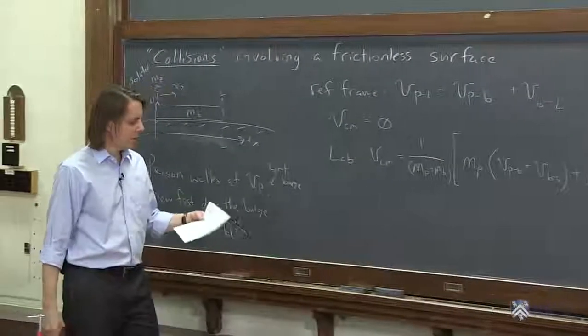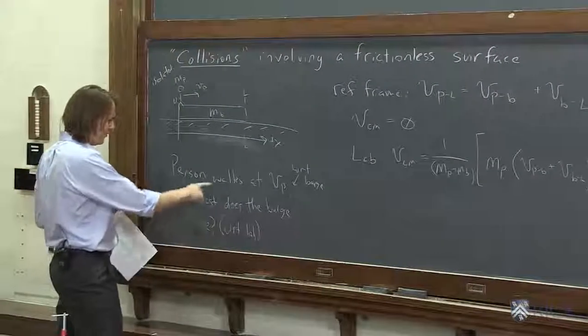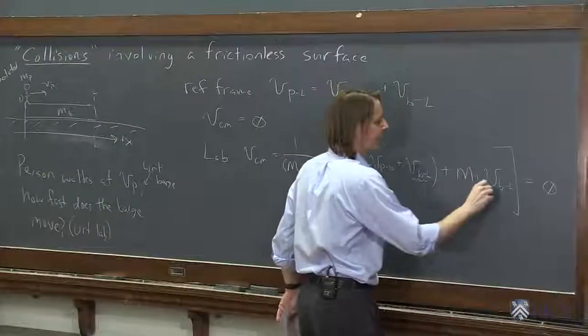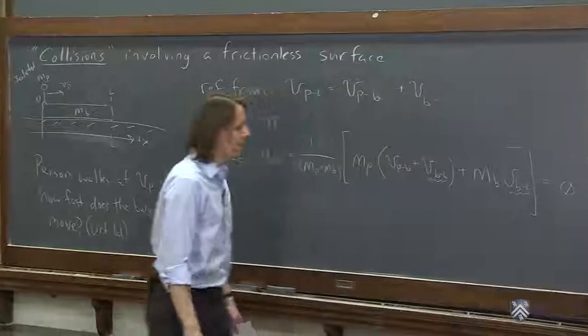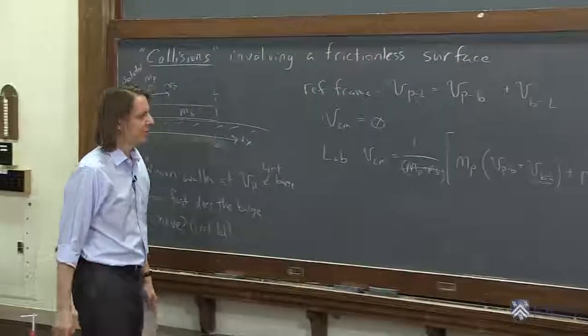All right, now let's see if my algebra skills have increased here. So what were we asked for? We were asked how fast does the barge move with respect to the lab? Okay, we're trying to solve for this. Equal to zero, so I can cancel that. Multiply both sides by the total mass. And now we're solving for the velocity of the barge in the lab frame.